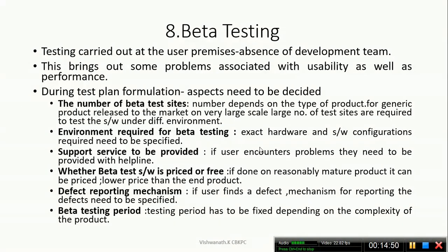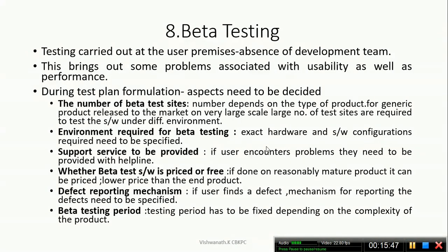The second aspect is the environment required for Beta Testing. The exact hardware and software configurations need to be specified. For example, if your application is network-based, the hardware components and software configuration required for testing must all be clearly specified.